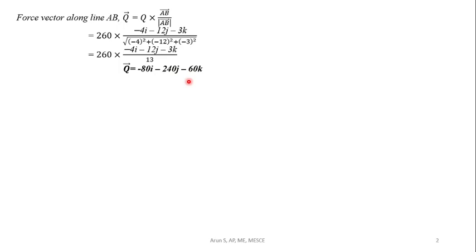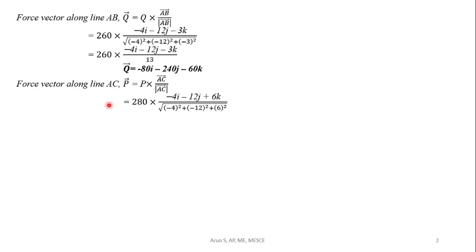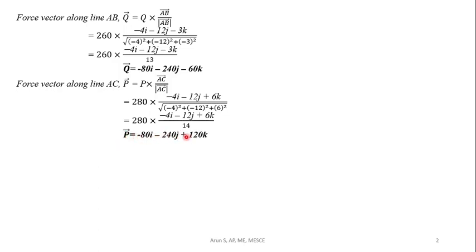Next, we find the force vector along line AC, that is the P vector. P vector is given by the magnitude of force P multiplied by AC vector divided by the modulus of AC vector. Substituting, we get 280 multiplied by (-4i - 12j + 6k) divided by the root of ((-4)² + (-12)² + 6²). Simplifying, we get P vector as -80i - 240j + 120k.